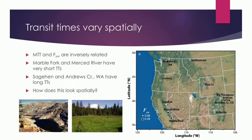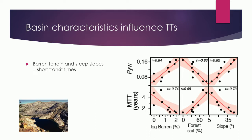Looking at how transit times vary spatially — here's a map showing the young water fraction for all our catchments. The Merced River and Marble Fork have a large fraction of young water. Sagehen Creek has not so much young water. We would like to be able to map the sensitivity of catchments to acid deposition or nitrogen deposition. To do that, we can do a geostatistical analysis on our watersheds and develop predictive models.